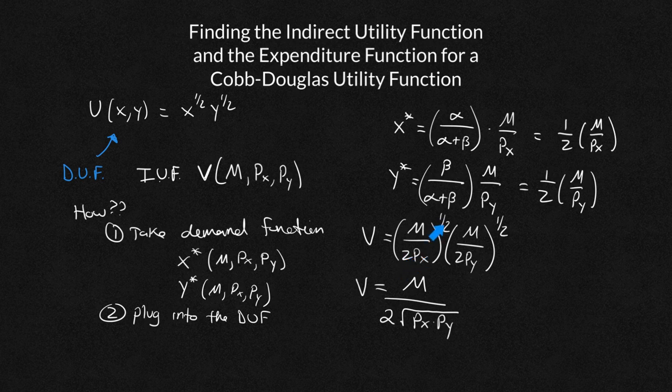Px to the 1 half. 1 half is the same thing as a square root. And if I were to have both things under the square root, I can just combine them. So Px, Py. So this was technically 2 times 2, which is 4, square root of 4. But that's just going to be 2. And there, right here, is my indirect utility function.